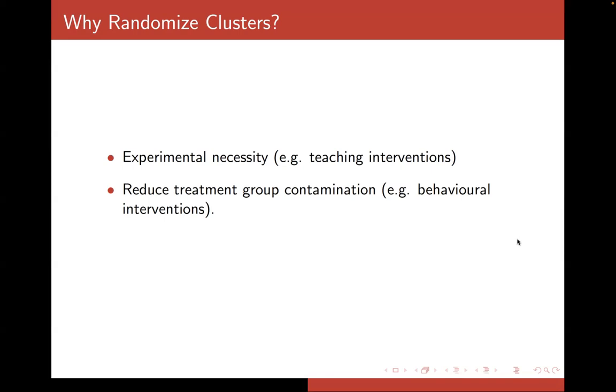randomizing by clinic or geographic area to minimize the social interaction between treatment and control group participants can help reduce the risk of control group members learning about the intervention and biasing the results.